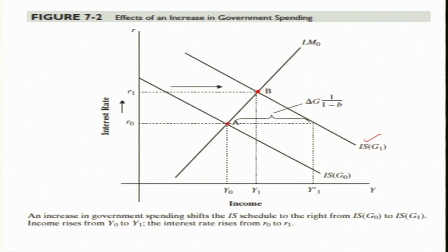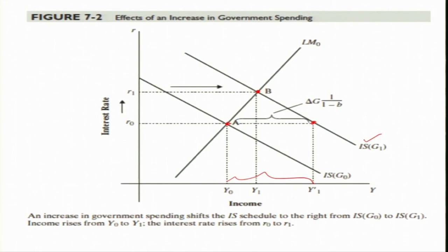You can see two things here. Suppose if there was no LM curve at all — the increase in income from A should be this full distance del Y. But since the money market is present, when there is an increase in government expenditure, the interest rate is going to increase. How does the interest rate increase? The rate of interest increases from R naught to R1, and there are two reasons why the rate of interest increases.